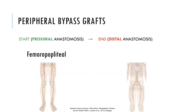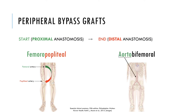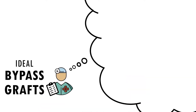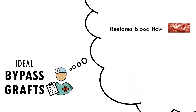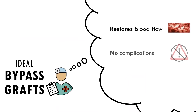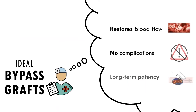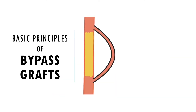A femoral-popliteal bypass is a bypass graft from the femoral artery to the popliteal artery. An aortobifemoral bypass is from the aorta to both femoral arteries. Ideally, bypass grafts restore adequate blood flow, are complication-free, and have a high long-term patency rate, meaning they remain open and working for many years.